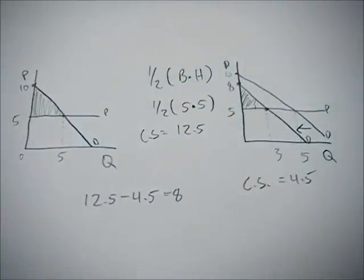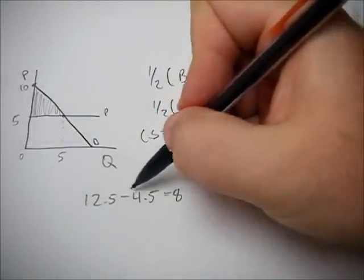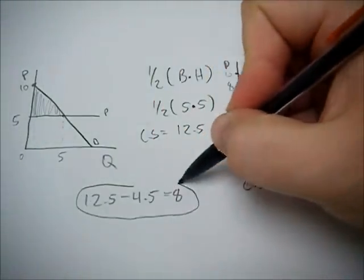So really, to solve these problems, all you have to do is shift that curve, know what the values are, calculate the areas of the triangles, and then subtract one from the other to find the difference.